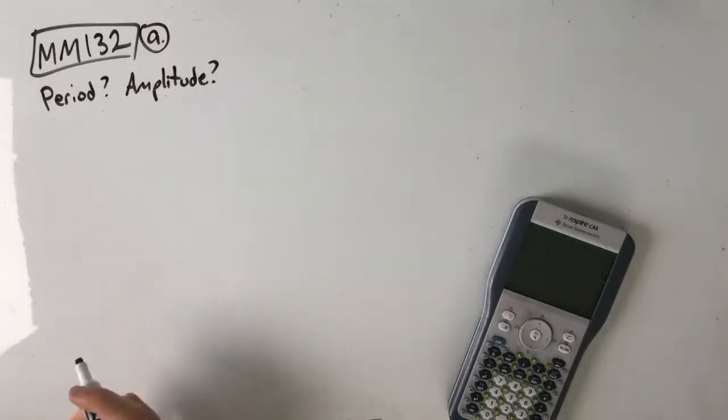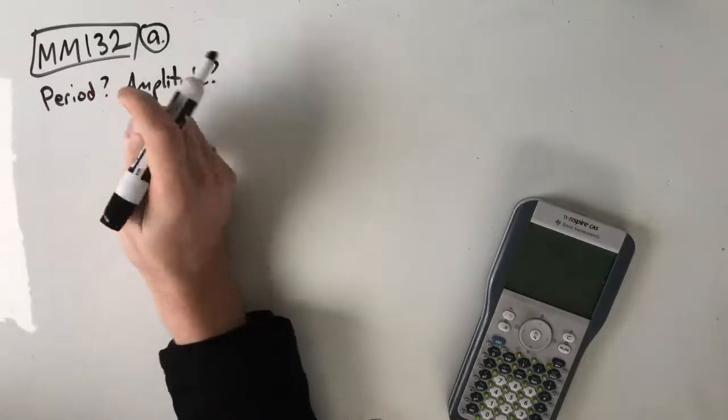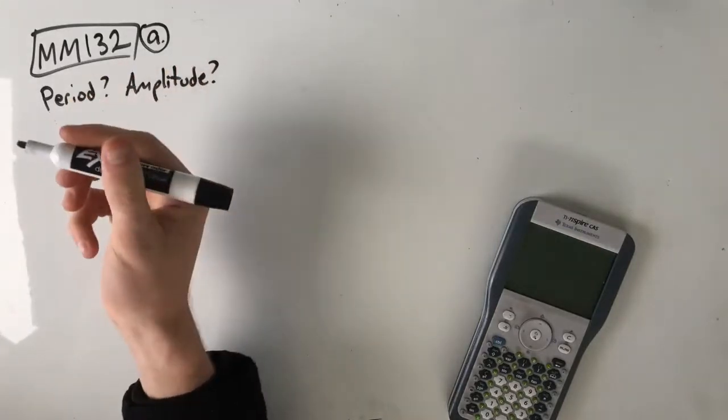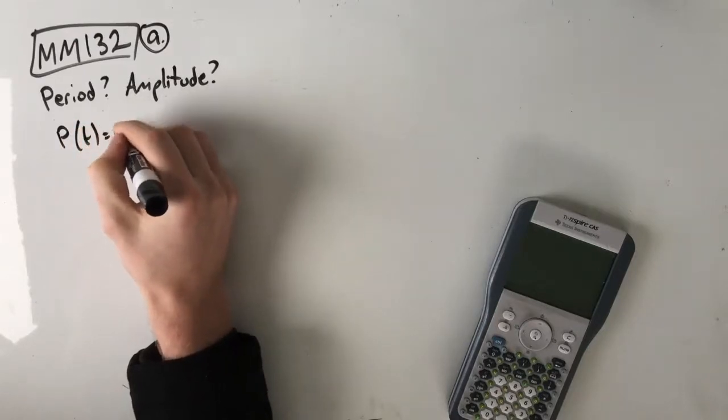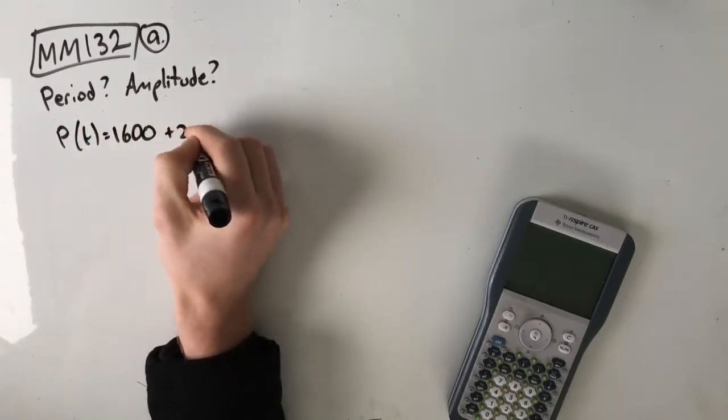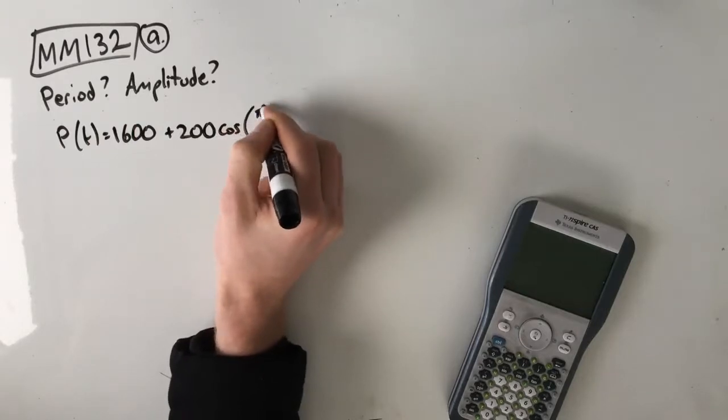Hey guys, this is question MM132 of the Maths Methods Fortify Study Guide. We've got this application question. The population of possums in a particular location varies according to the function p(t) equals 1600 plus 200 cos of pi t over 4.